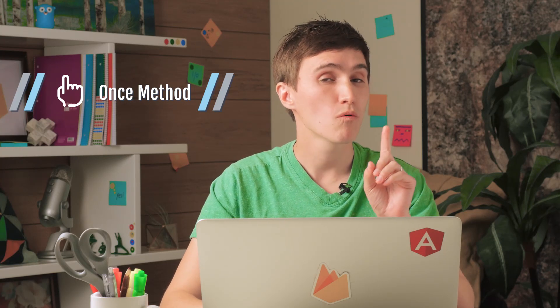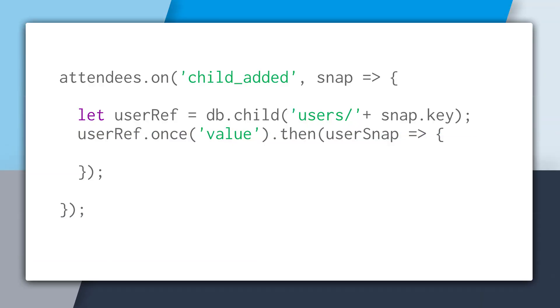One thing to note is that we're using the once method, which will only retrieve that data one time and not listen in real time. This is the easiest way to do a join because you're not going to have to worry about inner subscriptions. To see what those are, let's look at what happens when we use the on method.